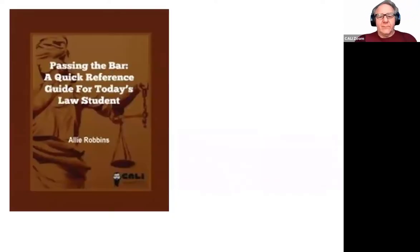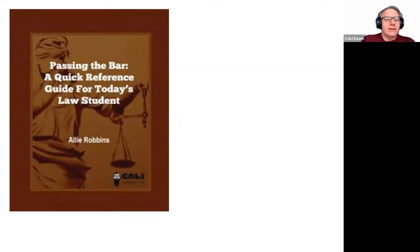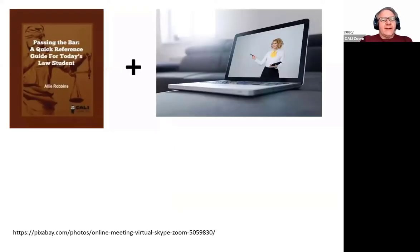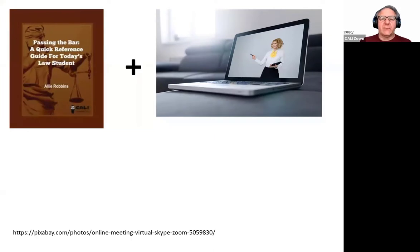Let me give an example from a book we've just published. Allie Robbins, an academic support person at CUNY, has just written a short book — a quick reference guide for today's law student. It's great that we now have a book for people preparing for the bar, but every school is different, every school has different students, every student has different problems. You can imagine taking this book and combining it with your own videos, tutorials, or Zoom meetings that you'll have with those individual students.